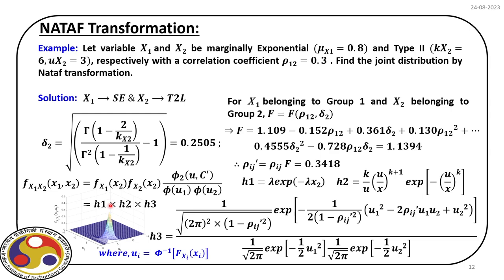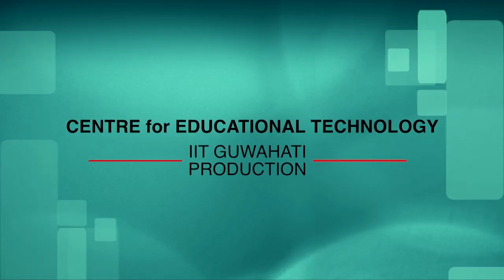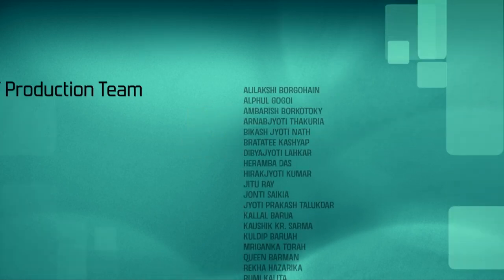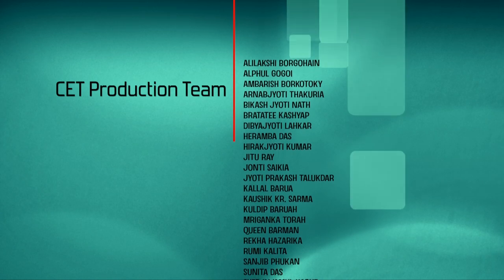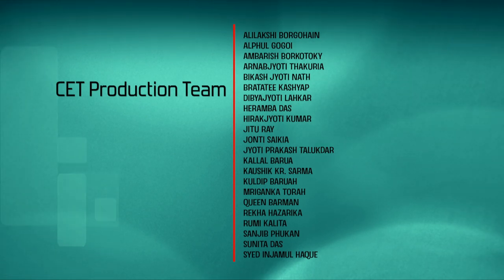As we progress, we will see how to use Nataf transformation for reliability analysis in other modules. From the definitions of random variables and the correlation coefficient, we are now in a position to estimate the joint distribution. With that, we close our discussion on the Nataf model and will continue with isoprobabilistic transformation in the next class, where we will discuss another model and some applications. Thank you very much.